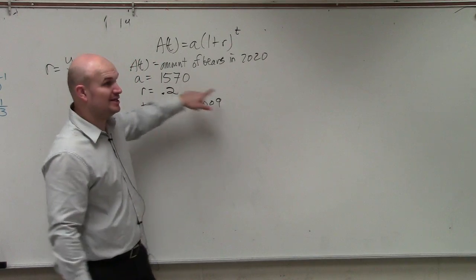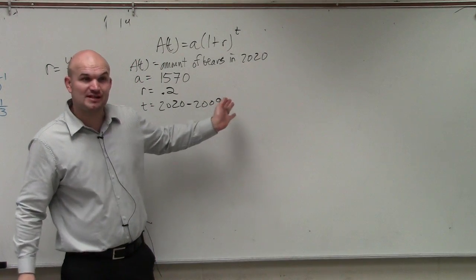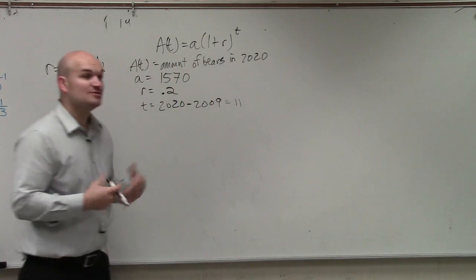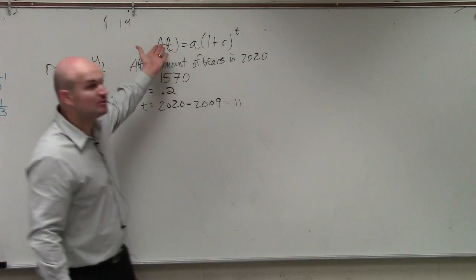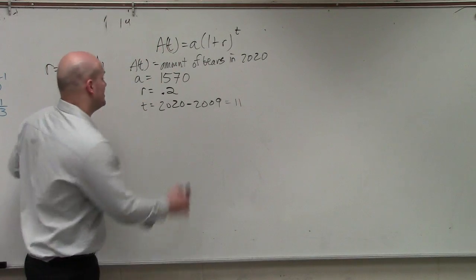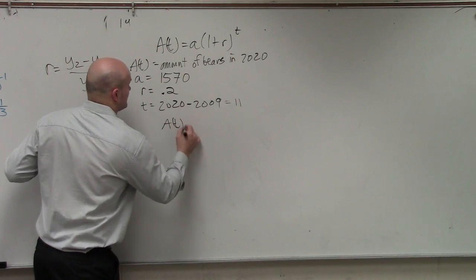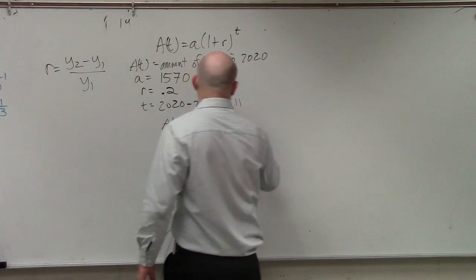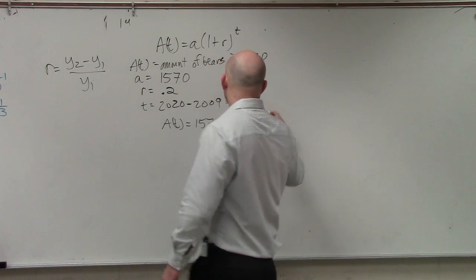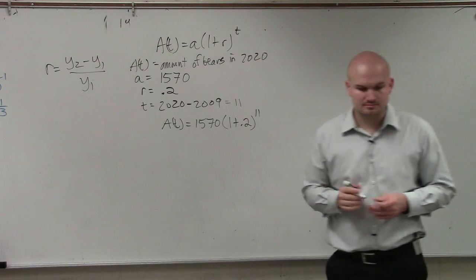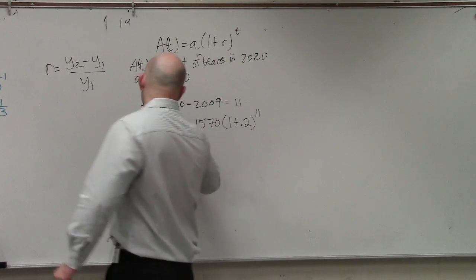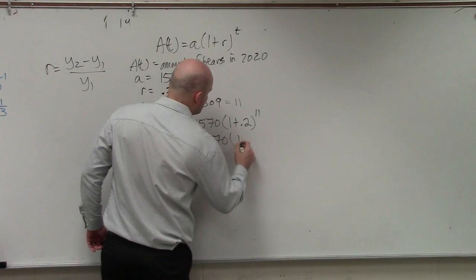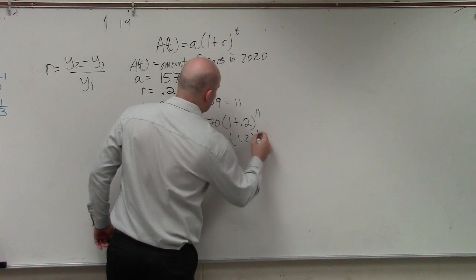How many years have passed? 11. So now we have all the information and we know what we're solving for. Now we just plug it in. So you have A of T equals 1,570 times 1 plus 0.2 raised to the 11th power. So A of T equals 1,570 times 1.2 raised to the 11th power.